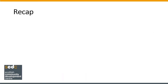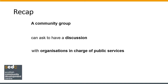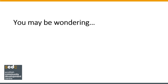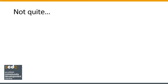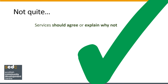A good outcome also makes the participation request harder for the Public Service Authority to refuse. A community group can make a participation request to ask to have a discussion with organisations in charge of public services about how to improve these services. When you normally request to participate in something, the person or organisation you are asking can just say no, and sometimes you may not even hear back at all. In this case it doesn't quite work like that — by law the Public Service Authority should agree to your request, and if it doesn't, it must explain why, giving good reason.